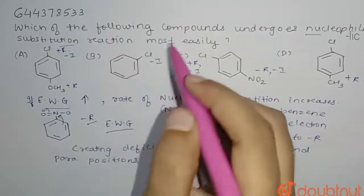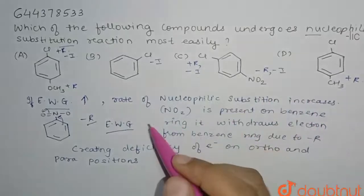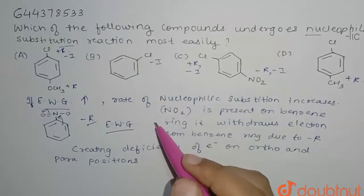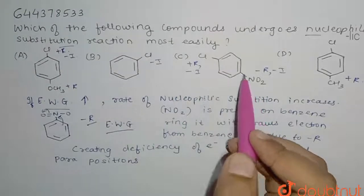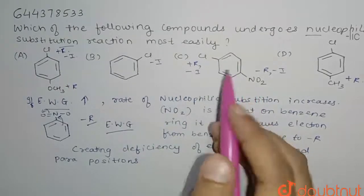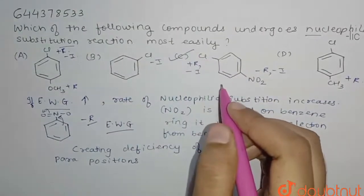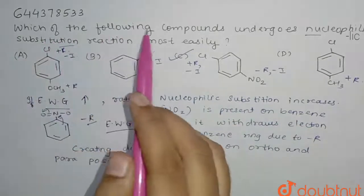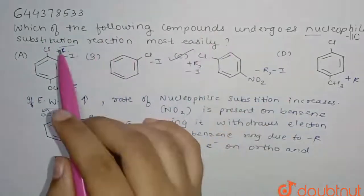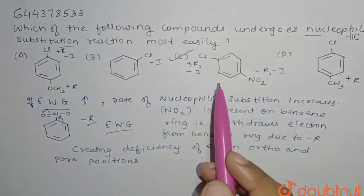We have seen that the rate of nucleophilic substitution increases when an electron withdrawing group is present. In option C, we have higher resonance and higher minus-I effect, so the answer is option C. The compound in option C undergoes nucleophilic substitution reaction most easily. Thank you.